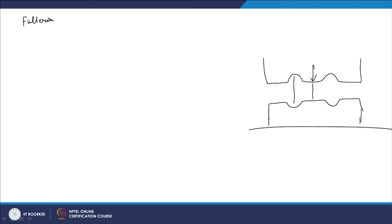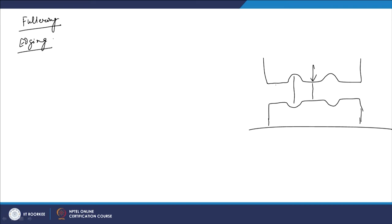After fullering, you have edging. Edging is also called making the preform. In edging, you try to gather a suitable and exact amount of material at different cross-sections. The shape will begin to come similar to what you have to achieve. It ensures defect-free flow of material, complete die fill, and minimum material loss. Edging ensures the exact amount of material is accumulated at the respective positions.